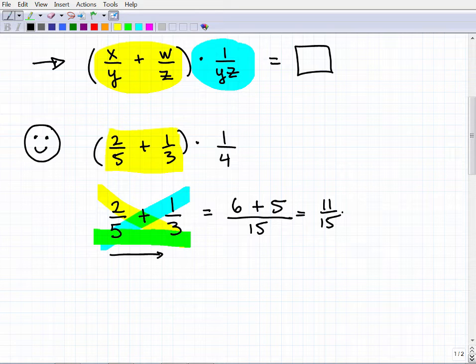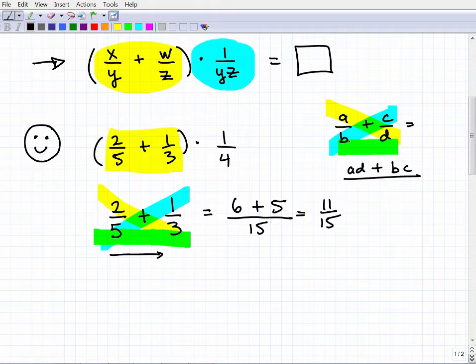This can work with anything. If I have a over b plus c over d, this works the same way. We're going to go this times this, this times this, this times this. So this is going to be a times d, which is ad. Now this is addition, plus b times c is bc, over b times d, bd. That's it.